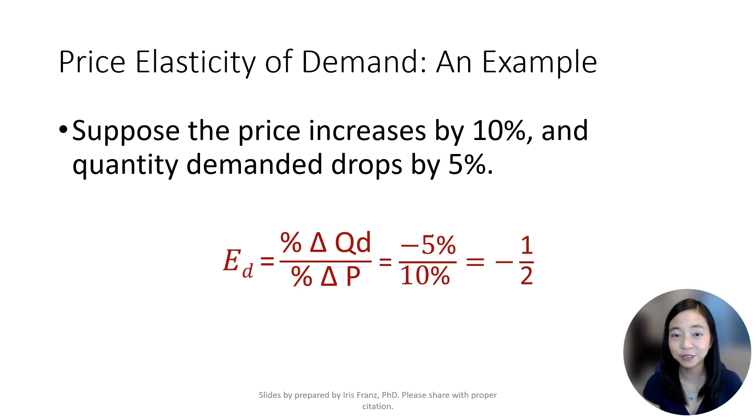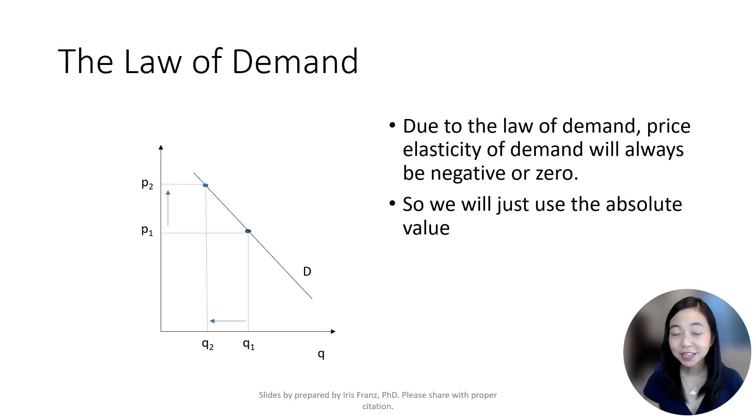There is no unit in the answer, as price elasticity of demand is really just a ratio. Due to the law of demand, price and quantity demanded are always moving in the opposite direction. Therefore, your price elasticity of demand is either a negative number or zero. Therefore, we will just take the absolute value to save some work.